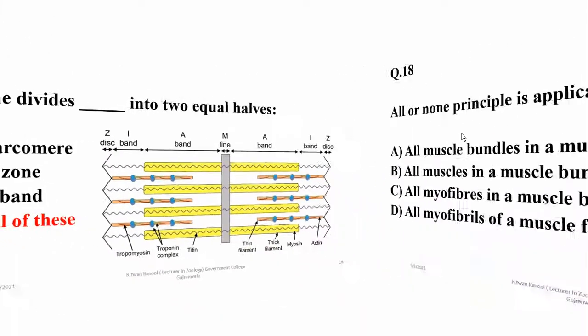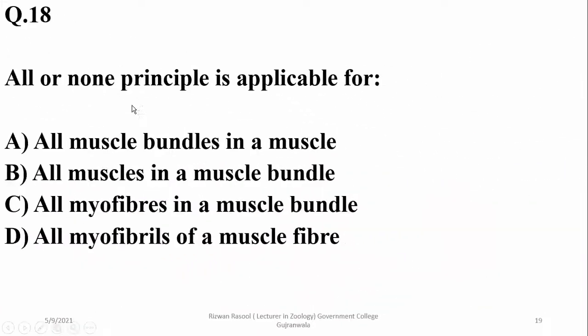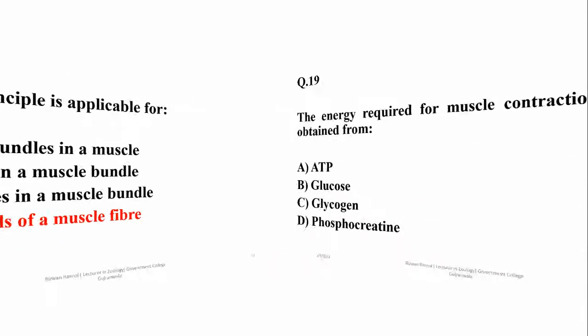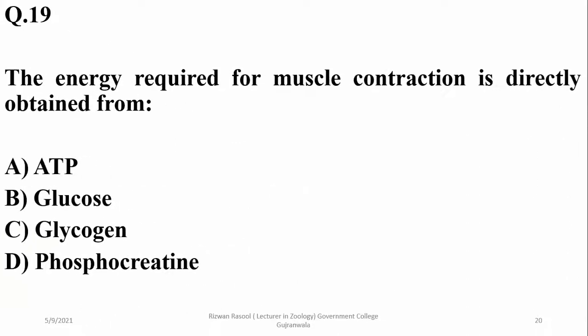The all-or-none principle is applied at the cell level — all myofibrils of a single muscle cell contract and relax at the same time. Delta is correct. The energy required for muscle contraction is directly obtained from ATP, which is alpha.